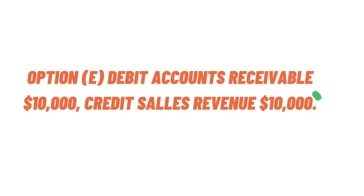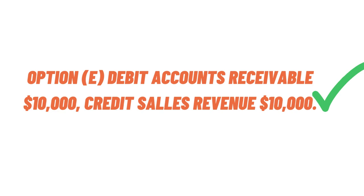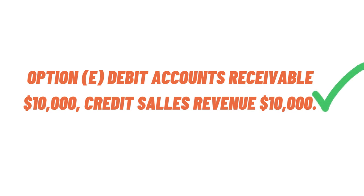Option two is debit accounts payable with $10,000 and credit sales revenue with $10,000 — incorrect. Option three is debit sales service expense with $10,000 and credit sales revenue with $10,000 — also incorrect. Option four is debit cash with $10,000 and credit sales revenue with $10,000 — that's incorrect as well.